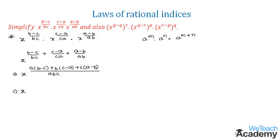So this would be here x power: a into b is ab minus a into c would be minus ac plus bc minus ab plus ac minus bc, divided by abc.